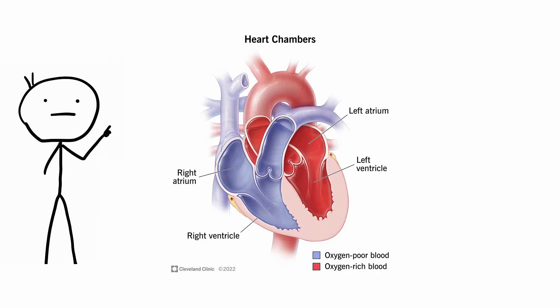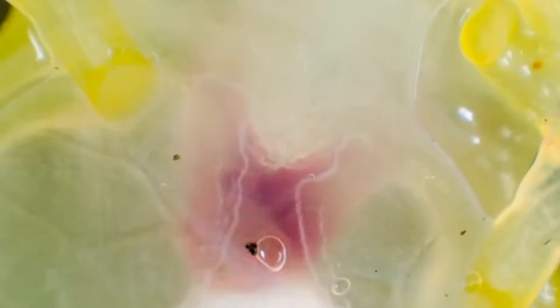The four-chamber human system means that oxygenated and deoxygenated blood remain separate, but in frogs, the blood is mixed when the left and right atria empty into the single ventricle. Does that sound inefficient? It is.